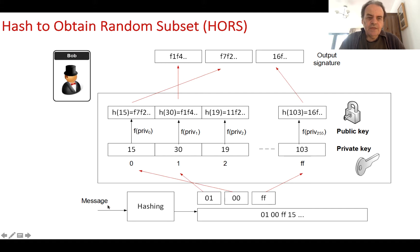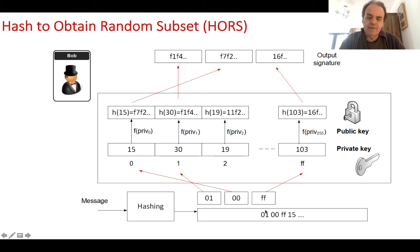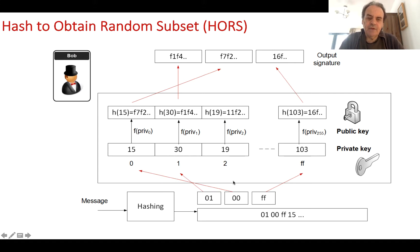We take the message and hash it to create a byte stream. We then take a certain number of bits at a time, take the integer value those bits represent, look up the table of our private key, find the associated public key value, and that becomes the signature value.